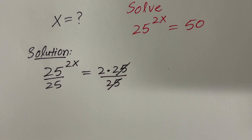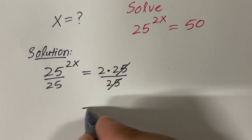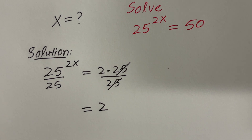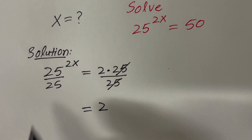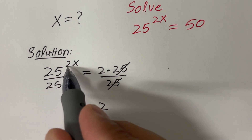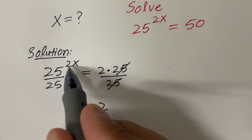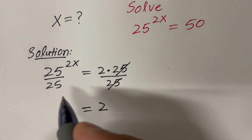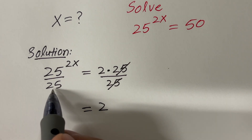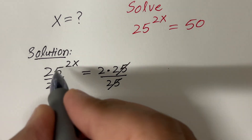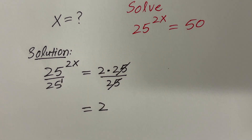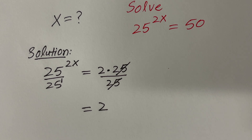So we will get rid of this 25 from the right-hand side and we will have just 2 here. And on the left-hand side, we have 25 raised to some exponent. We have only 25, which means we have 25 raised to the power 1. If you don't have any exponent, that means the exponent is 1.